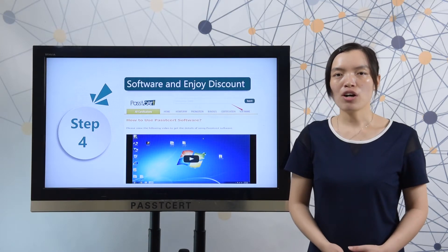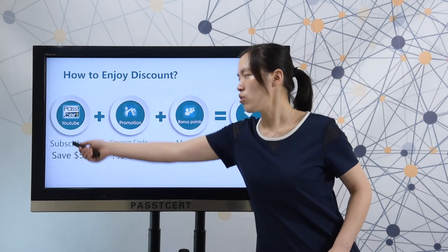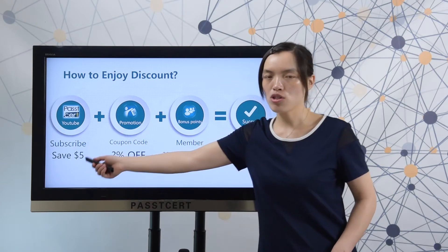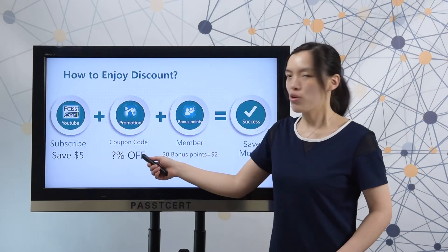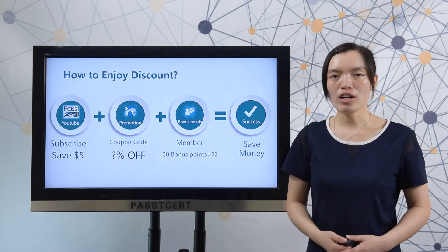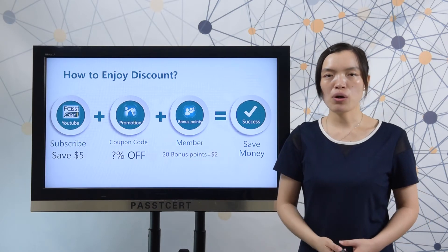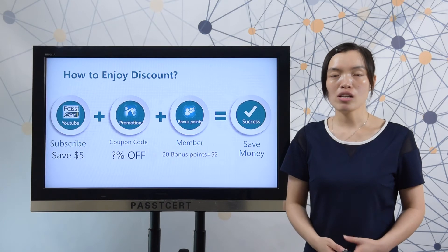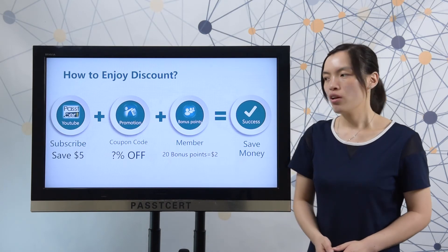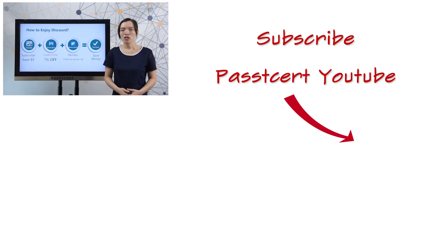Finally, let's view how to enjoy discounts at PassThisAll.com. Subscribe to the Pass This All YouTube channel and you can get a $5 coupon code. In our promotion page, we will show you our current sales promotions. You can use coupon codes to enjoy discounts. After you become our member, you can get 20 balance points, which are equal to $2. With all this, when you make a purchase at PassThisAll.com, you can save much money.